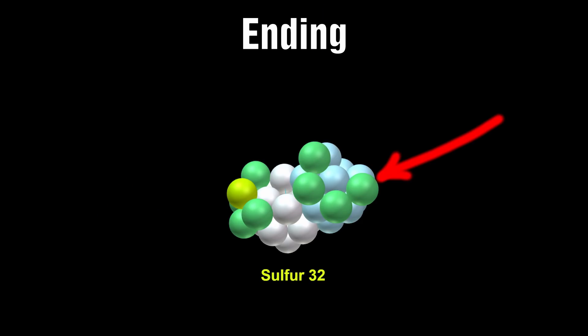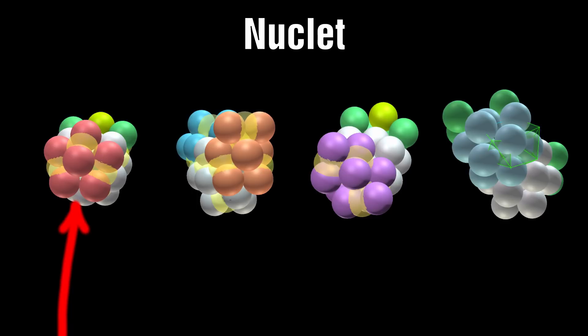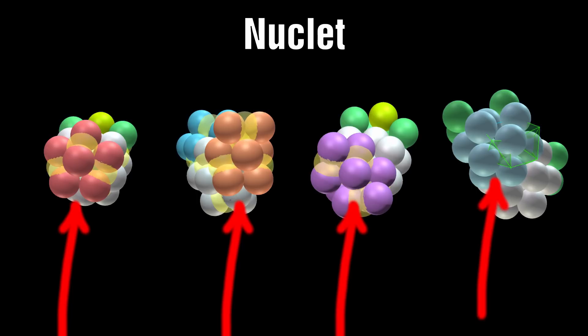Ending: this is a stable geometrically arranged cluster of protons and inner electrons. A nuclet is a densely packed geometrically arranged cluster of protons and inner electrons that belong to the building phase.